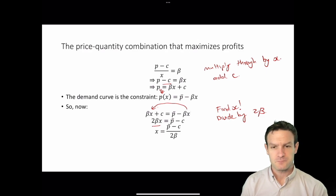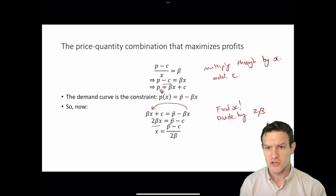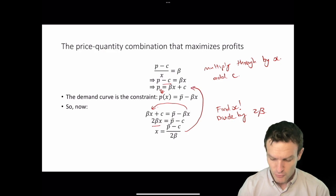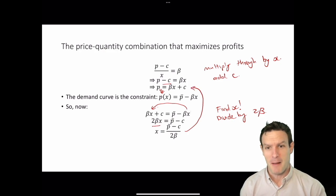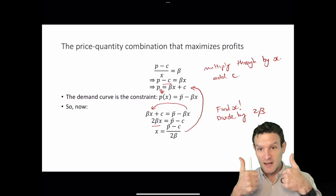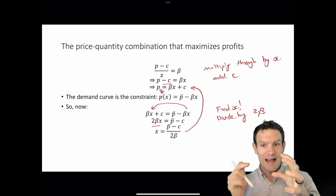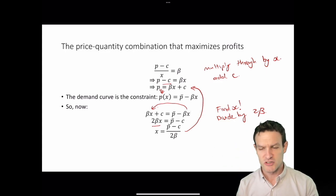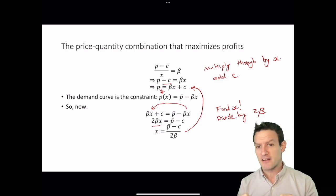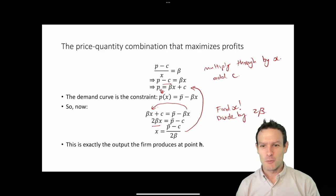We could substitute the profit-maximizing quantity back into the previous equation to find the firm's profit-maximizing price as well. When the firm sets MRS equal to MRT, it finds an equation of one variable in terms of the other and substitutes that back into the constraint — the demand curve. Having done so, that permits the firm to find its profit-maximizing price-quantity combination, which is exactly the output and price combination at point H.